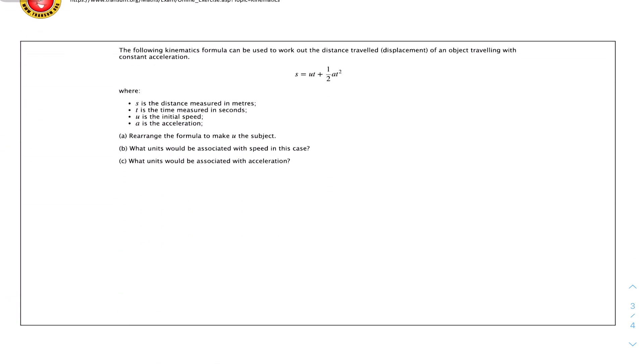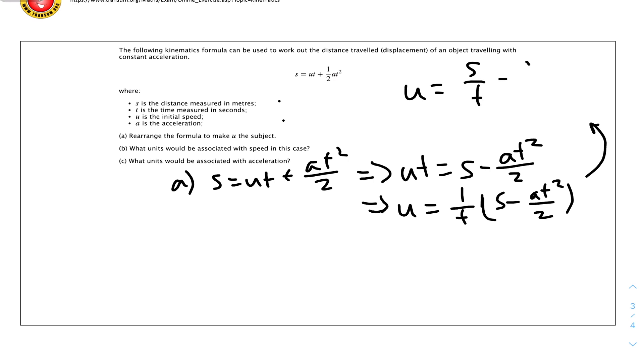Moving on to this question. The following kinematics formula can be used to work out the distance traveled, or displacement, of an object traveling with constant acceleration. Part A: rearrange the formula to make u the subject. So s equals ut plus half at squared can be written as at squared over 2. Then we rearrange to get ut equals s minus at squared over 2. Then u equals 1 over t times (s minus at squared over 2). We can simplify by multiplying everything by 1 over t.